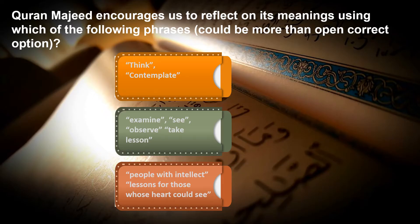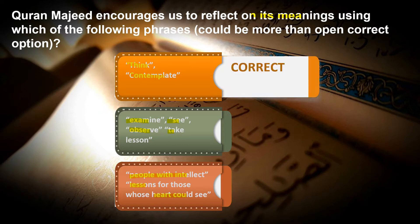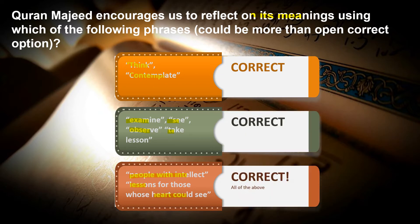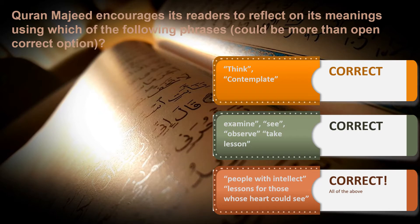The next question is: the Quran encourages its readers to reflect on its meanings using which of the following phrases? The correct answer could be more than one. The options are: to think or contemplate, to examine or to see, to observe, to take lessons, or words like 'people with intellect' referring to those who take cognizance of facts mentioned in the Quran, or lessons for those whose hearts could see. The answer is all three of these.